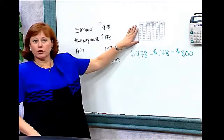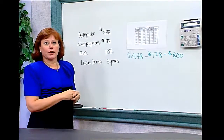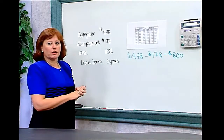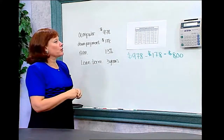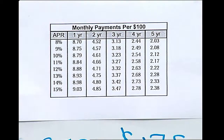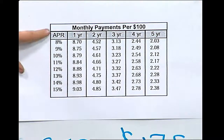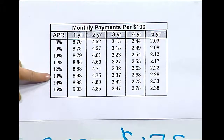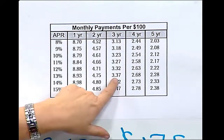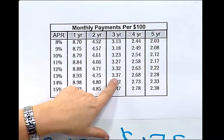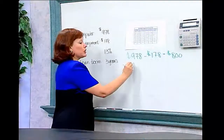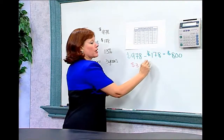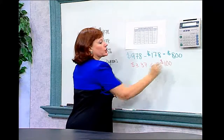This table is going to help us find out exactly how much money Kathy has to pay on her loan. She's taking out an $800 loan at 13% interest over a three-year period. We have a chart to figure out her monthly payments. We know she took out a 13% loan, so we come down the APR column to 13%, then move across to the three-year column. This tells us Kathy will pay $3.37 per month on each hundred dollars she borrowed.